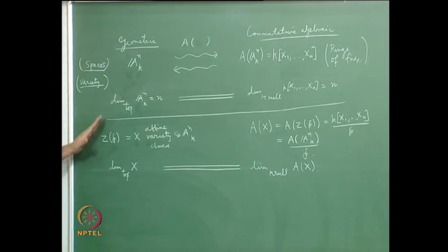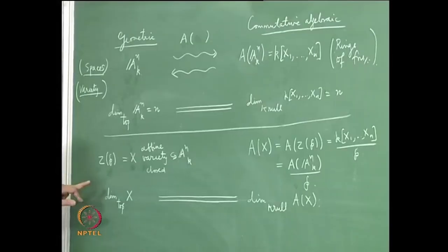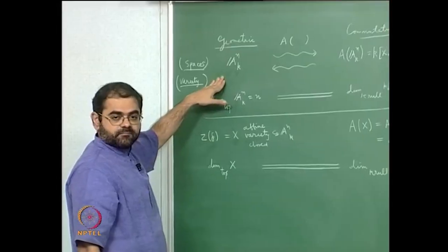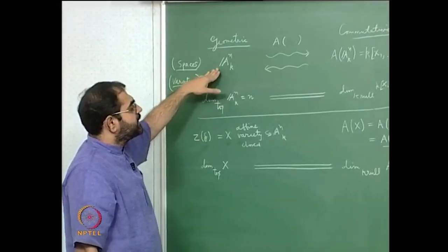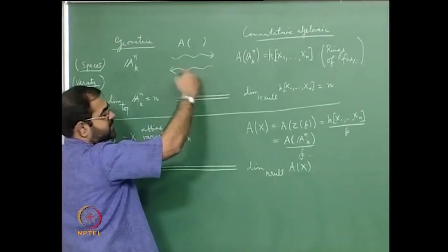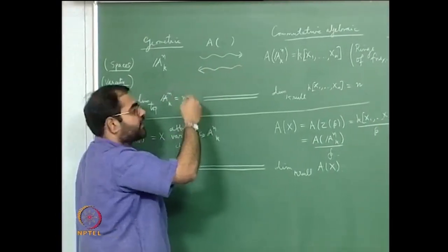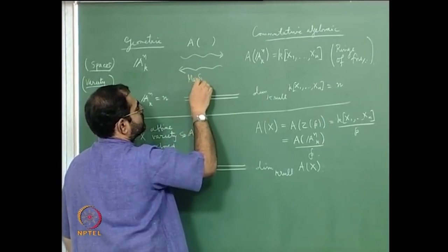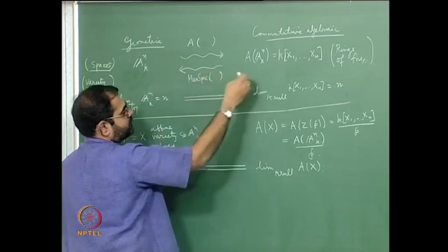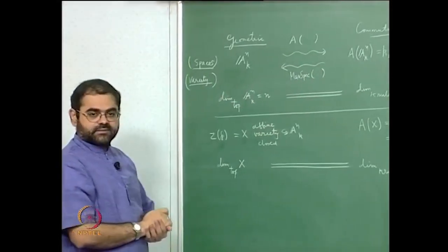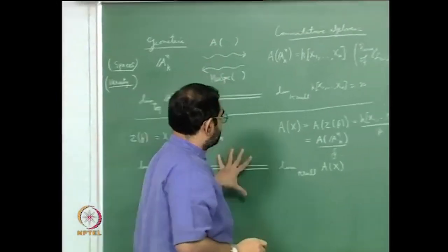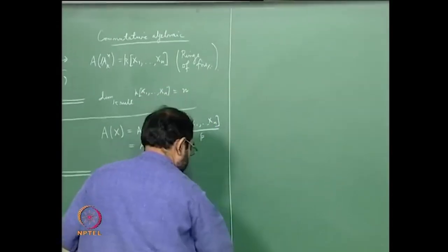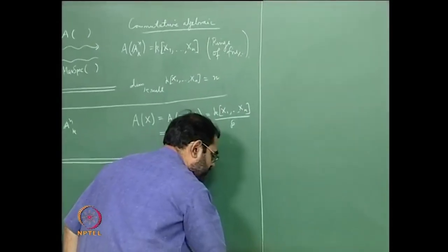This is the generalization — true for all affine varieties — of the statement which is true for affine space. I also want to tell you what this arrow going in the other direction is: that arrow is max spec, the arrow going from the algebraic side back to the geometric side.